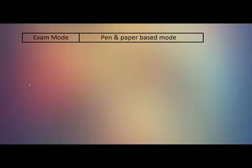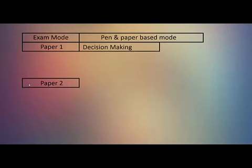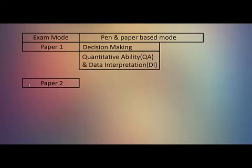The exam is divided into two papers — Paper 1 and Paper 2. Paper 1 sections are: Decision Making, Quantitative Ability and Data Interpretation (QA and DI), and Verbal and Logical Ability.